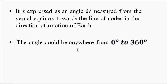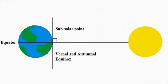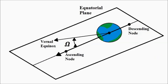The significance of the right ascension of ascending node from the point of view of satellite communication will be discussed when that topic comes up. There is no need to drag that topic here. When it is used later, you will understand what it means. So it is this angle between the vernal equinox line and the line joining the ascending and descending nodes, measured in the equatorial plane.